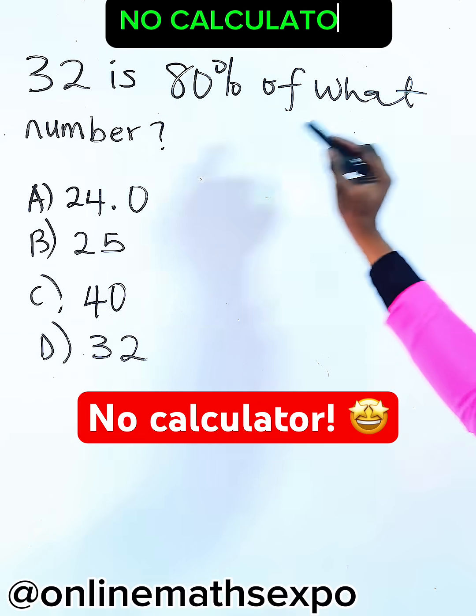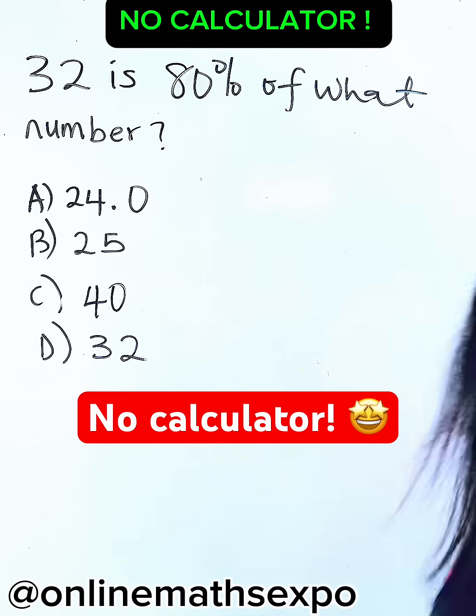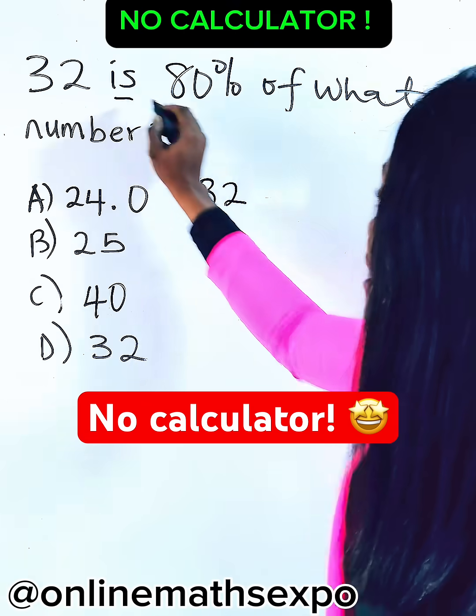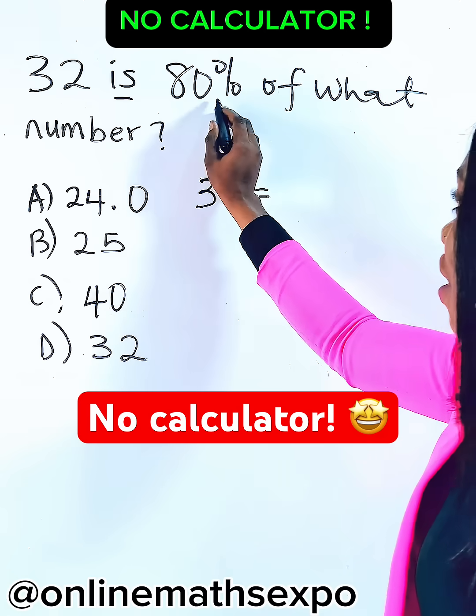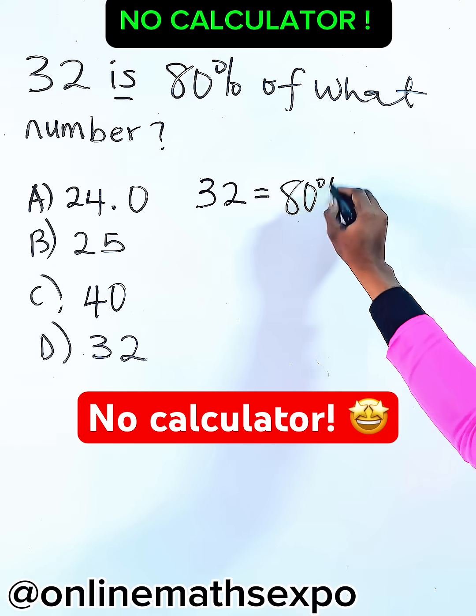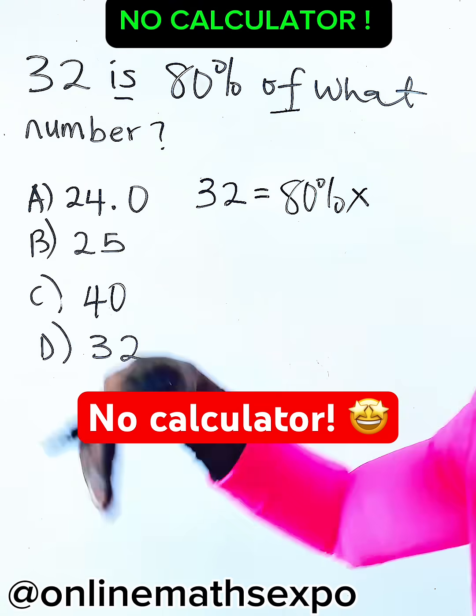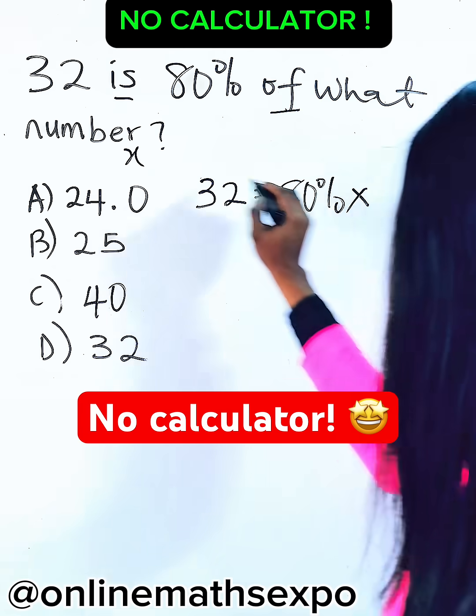32 is 80 percent of what number? So easy. What do you do? 32, bring it down, is equal sign, 80 percent. Write it off, turn it to multiplication. What number? You don't know, so use a letter x to represent it.